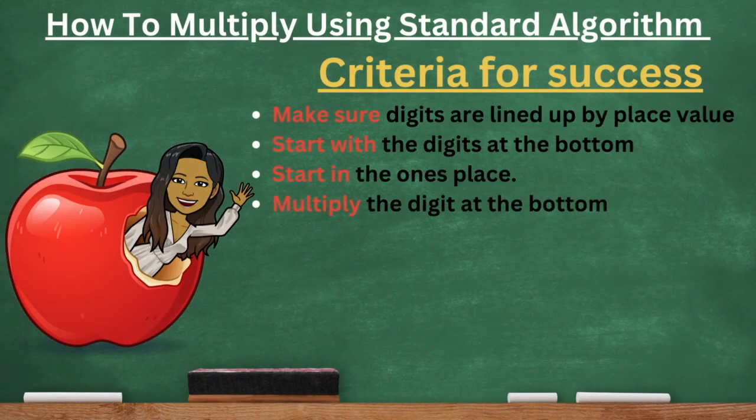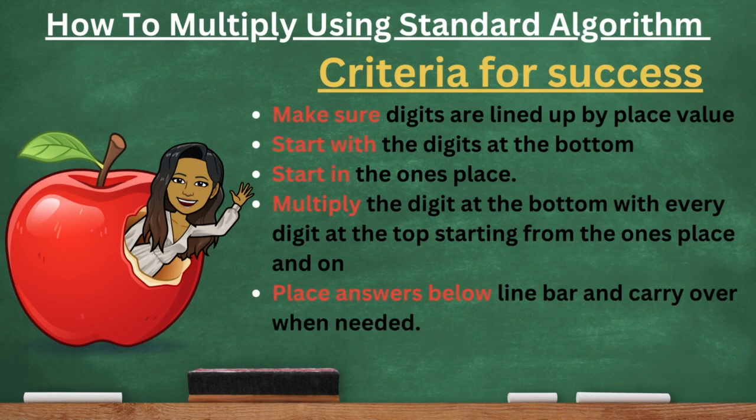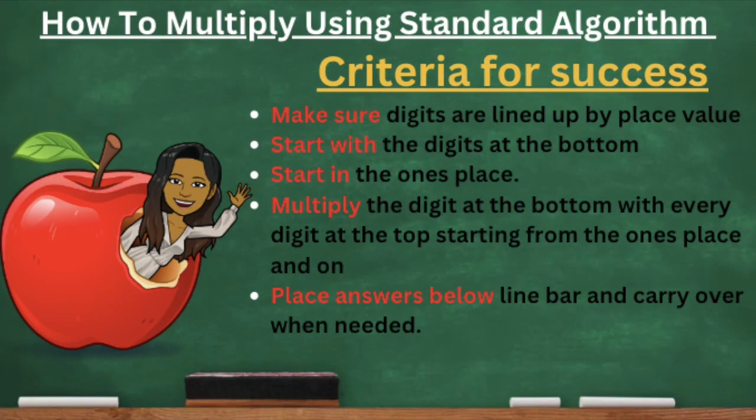Today you guys are going to be learning how to multiply using the standard algorithm. In front of you, you have your criteria for success. It says: make sure digits are lined up by place value; start with the digits at the bottom; start in the ones place; multiply the digit at the bottom with every digit at the top, starting from the ones place and on; place answers below the line bar and carry over when needed. I know that sounds like a lot, but let me show you guys a few examples.